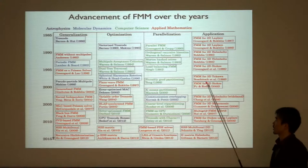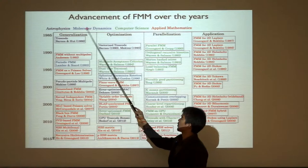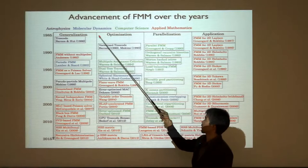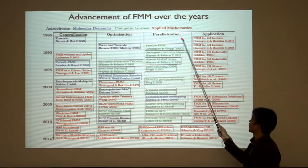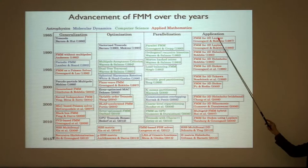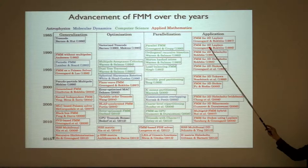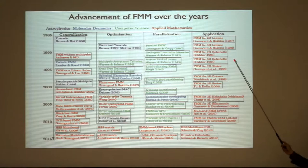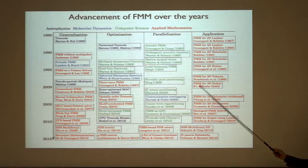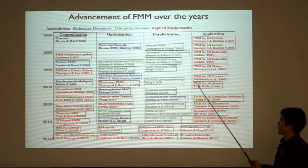These are all works related to the Fast Multipole Method. The different colors represent papers from different areas of science — astrophysicists, molecular dynamicists, computer scientists, and applied mathematicians have all contributed. Applied mathematicians developed the underlying math, initially focusing on extension from 2D to 3D and then to more complicated equations — all of which have Green's functions.